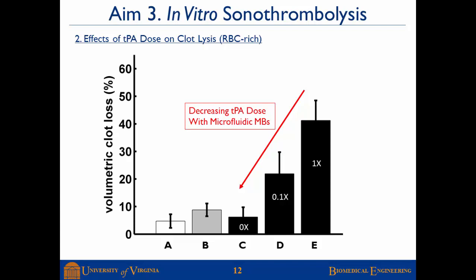We also investigated reducing the TPA dose, which is clinically important since several patients are contraindicated for TPA therapy and currently receive almost no intervention. Bars C, D, and E show microbubbles at different TPA doses: 1x (equivalent to clinical dose), one-tenth of the clinical dose, and no TPA at all. Even with no TPA, we still observe significant thrombolysis. We believe this is due to the increased bio-effects and cavitation of these larger microbubbles on the clot surface — essentially purely mechanical disruption of the clot.